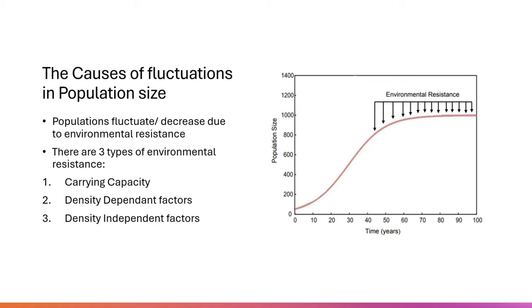Today we're going to look at the causes of fluctuations in population size. When we say fluctuations, it just means that the population is decreasing. For example, in a population, let's say three babies were born in one year, then two the next year, and then only one — so the population is slightly decreasing. This is due to a factor known as environmental resistance.